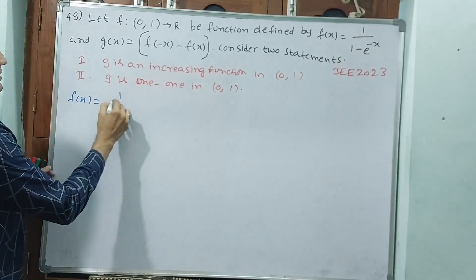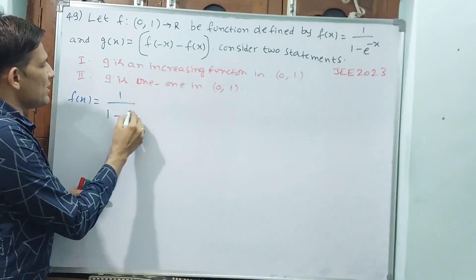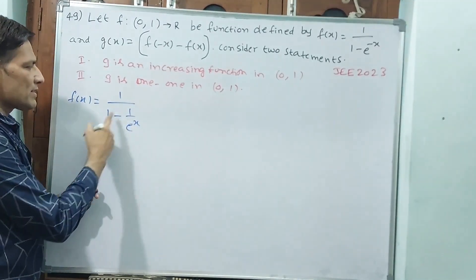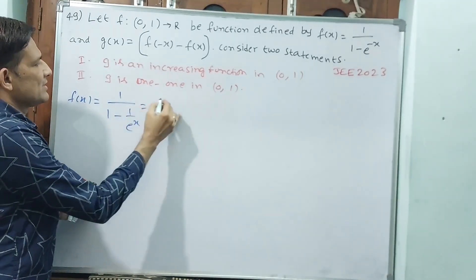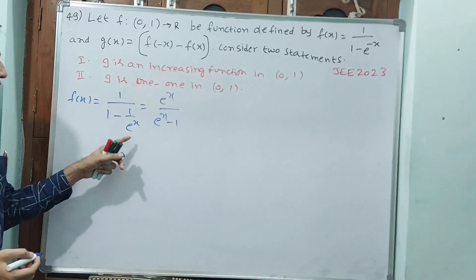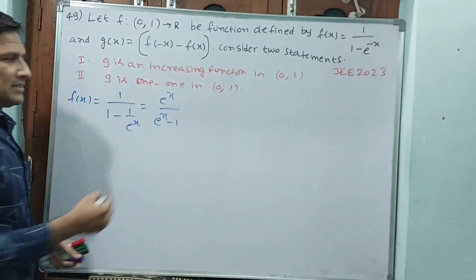See, I am rewriting. 1 minus e^(-x) means I want to write like this: e^x minus 1 divided by e^x. Is it correct? The denominator is numerator. This is f(x) there.